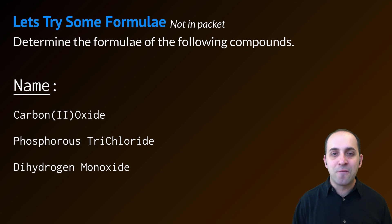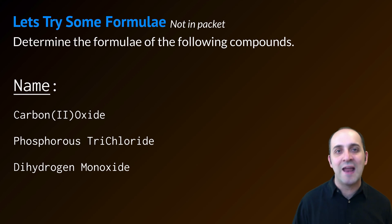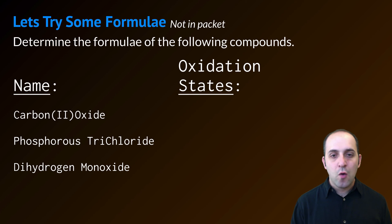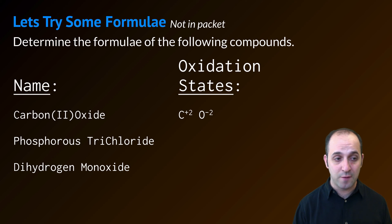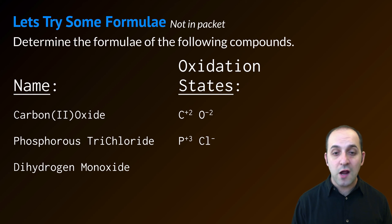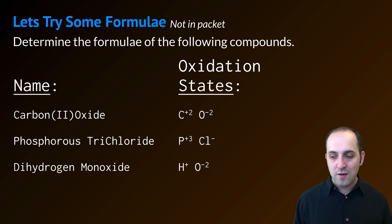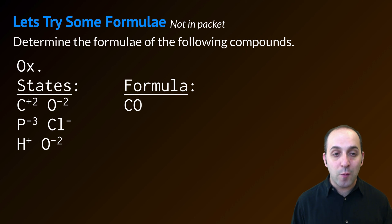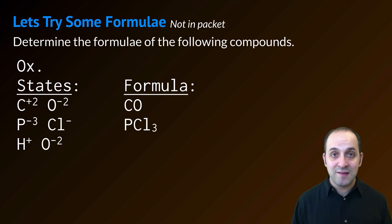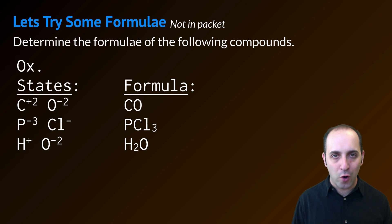Let's also work out some formulas — I've mixed up prefix and stock versions. The oxidation states for carbon(II) oxide are carbon +2 and oxygen -2, giving the formula CO — also known as carbon monoxide. Phosphorus trichloride has phosphorus +3 and chlorine -1, giving PCl3. Dihydrogen monoxide has hydrogen +1 and oxygen -2, giving H2O — of course nobody really calls it that; we just call it water.